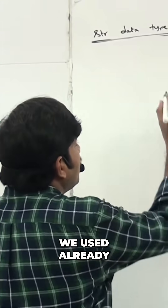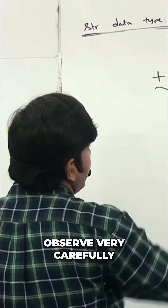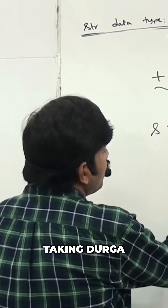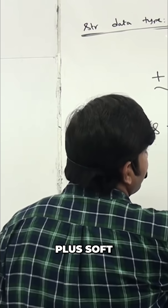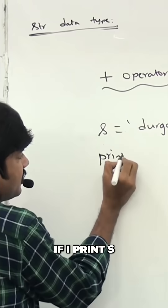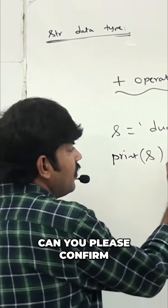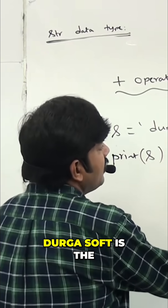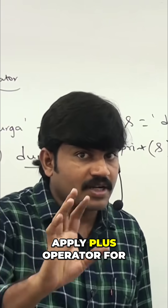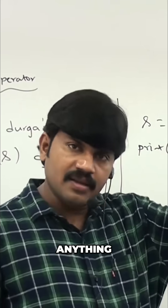We already use the plus operator for strings. For example, 'durga' plus 'soft' — if I print that, the answer we're going to get is 'durgasoft'. If you want to apply the plus operator for a string, at least one argument must be a string; the other can be anything. It simply acts as concatenation.